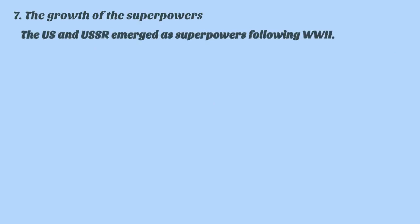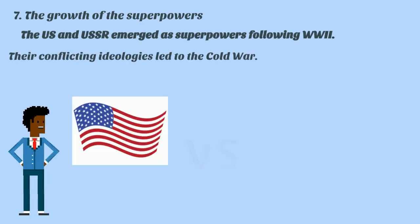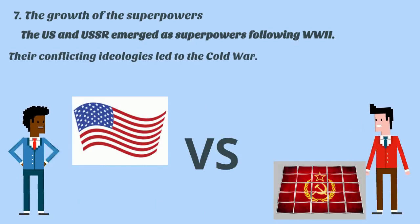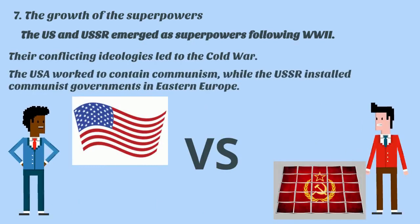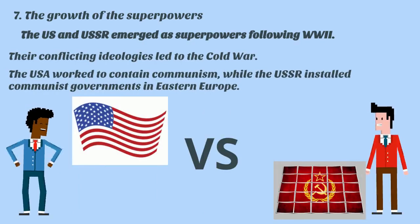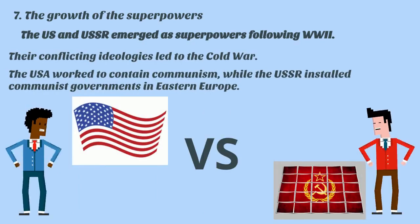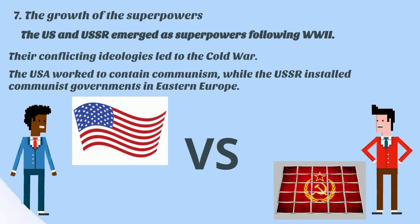After World War II, the USA and the USSR emerged as superpowers. Their conflicting ideologies led to the Cold War. The USA worked to contain communism, while the USSR installed communist governments across Eastern Europe.